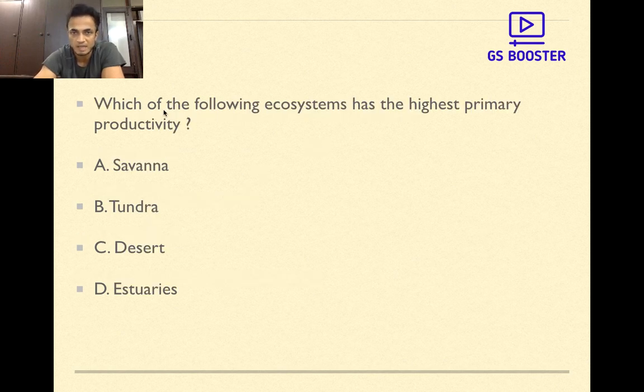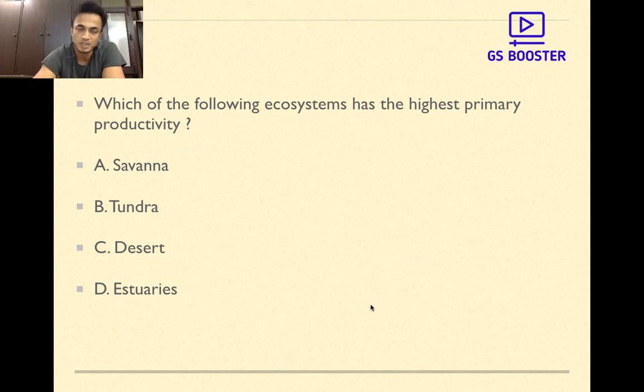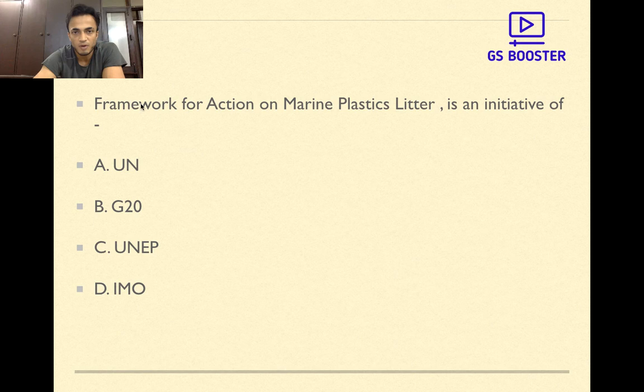Now the next question is: Which of the following ecosystem has the highest primary productivity? Savannah, tundra, desert, estuaries. UPSC's old style of asking questions regarding ecology's basic concepts - in the last two years they haven't asked such questions but yes, until 2017 UPSC asked this. Definitely if you are good at concept you can easily answer. A savannah, B tundra, C desert, D estuaries. The answer is D, estuaries.